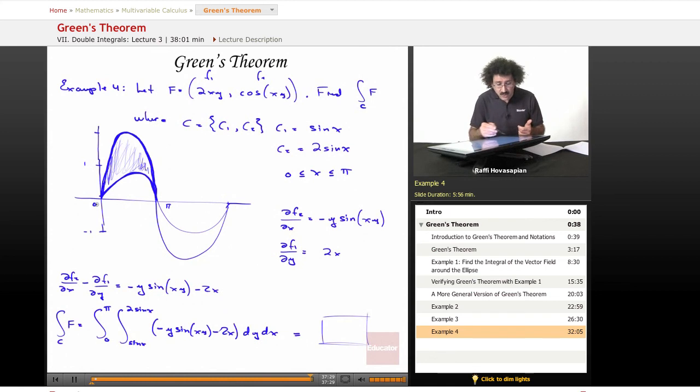We take df2 dx minus df1 dy. That's our integrand. We have our limits of integration, 0 to pi, sine x to 2 sine x. And that's about it. The rest is just a question of plugging it into your software and getting some number. So that's it. That is Green's theorem.